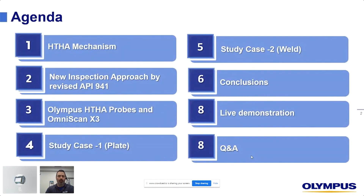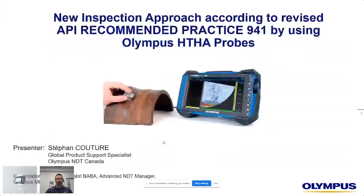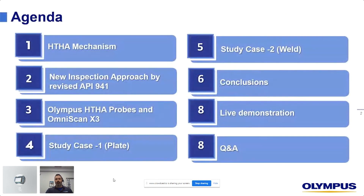Moving on, we'll be covering today the HTHA mechanism and how it happens. We'll also base our knowledge and methods of inspection on the new revision of API 941. A bit of marketing for our product — the Olympus HTHA probe kit as well as the OmniScan X3, and what makes it a great combo. Then two study cases. This presentation is courtesy of a colleague in Dubai — thank you for that. We'll also have a conclusion, demonstration, and a Q&A session at the end.